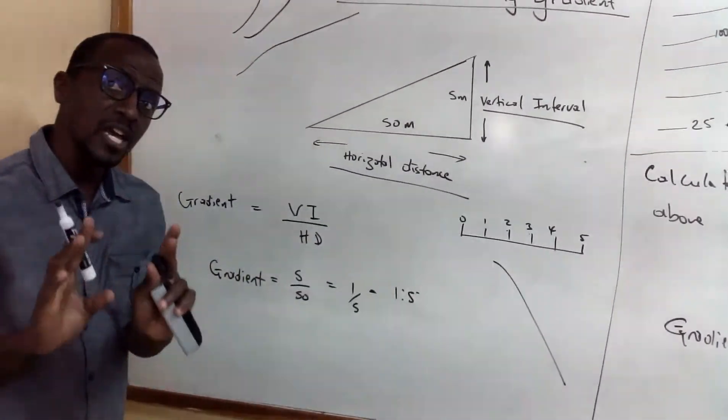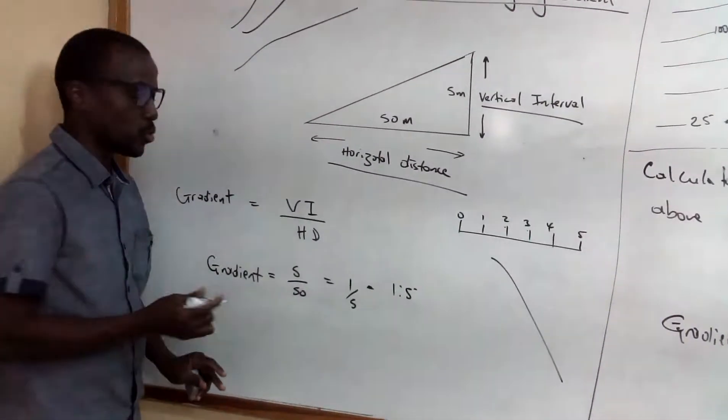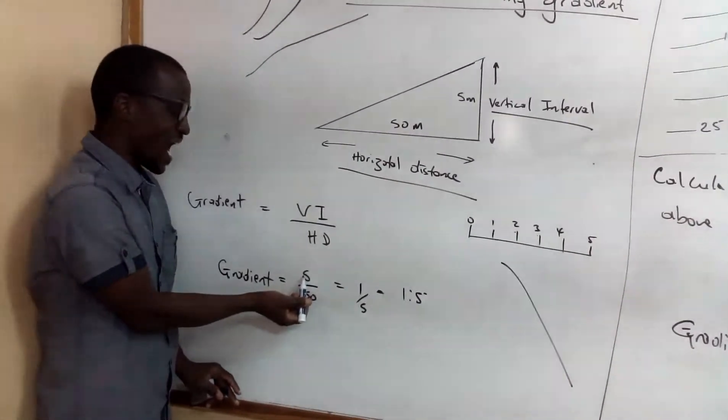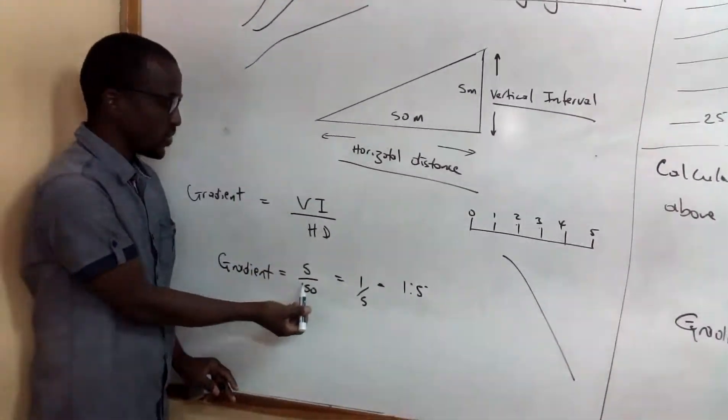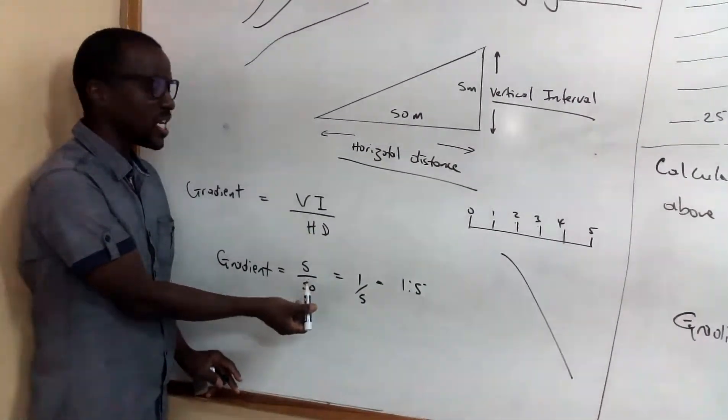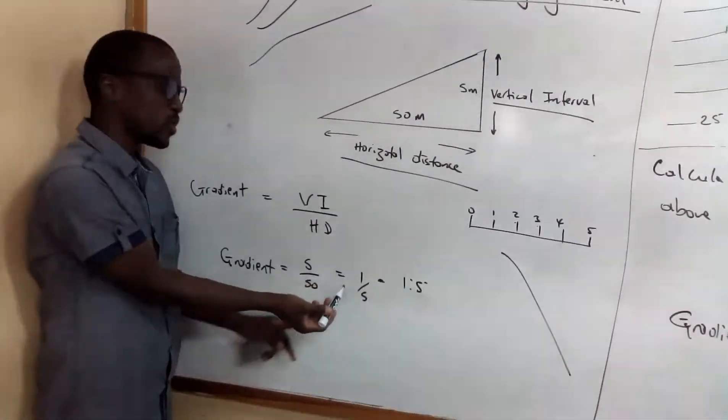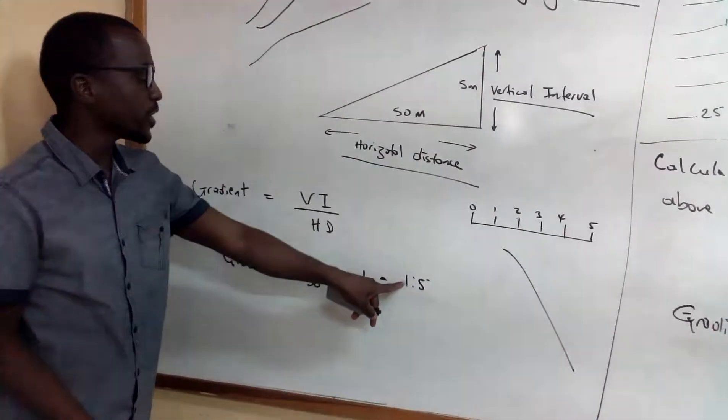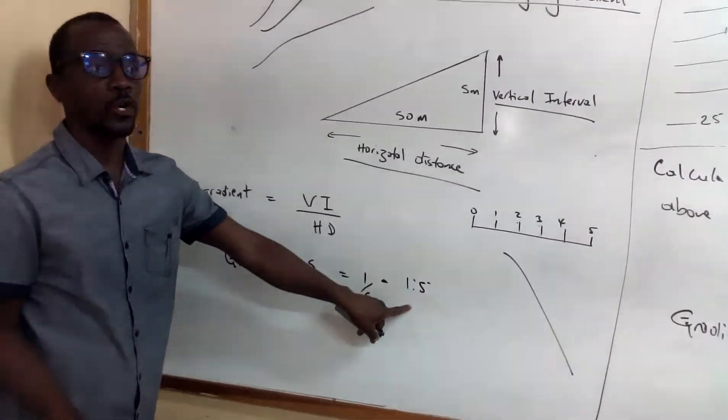So in calculating the gradient what I would do, I would have the VI which is 5 and HD which is 50. And we are doing mathematical calculation and you will get 1 over 5 which will be a fraction or you can write it as a ratio.